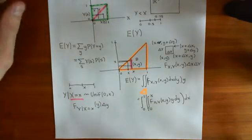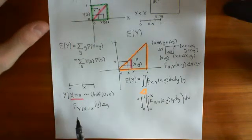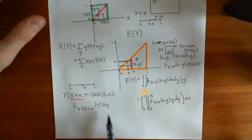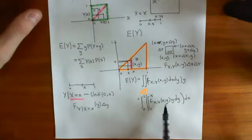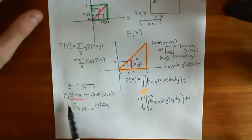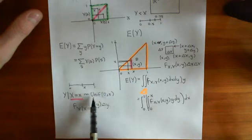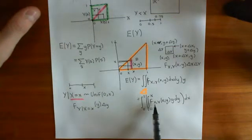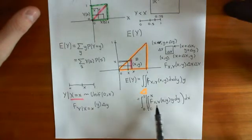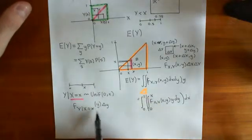Welcome back to this fourth video on an example of how to use the law of total expectation. What we are trying to do is basically replace this, which we don't know, with this, which we do know. I know what this is going to be because I know it's uniformly distributed on zero to x. Now what I'm trying to do is get it in terms of this joint probability density function over here, so that I can rearrange and get what this is in terms of this.